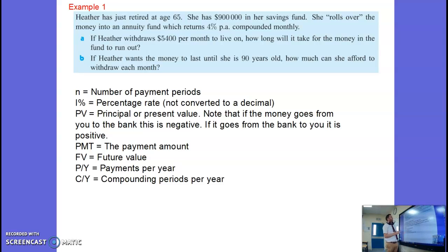N, the number of payment periods, well that is what we're finding out because we're seeing how long it takes for this to run out. The percentage, that's pretty straightforward, 4%. The principal value, $900,000. It's in the bank so it's negative.